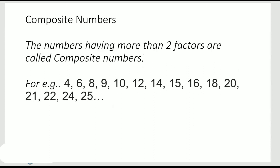What are composite numbers? It's just the opposite of prime numbers. The numbers having more than 2 factors are called composite numbers. For example, we just saw 4 has 3 factors and 6 has 4 factors. So whenever you have more than 2 factors, those numbers would be composite numbers.